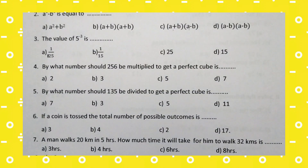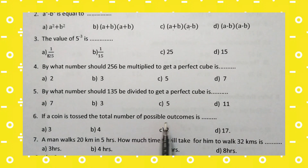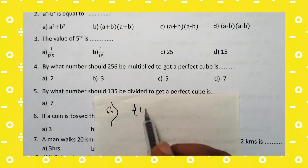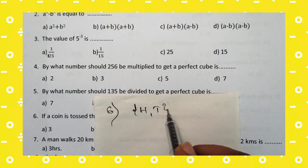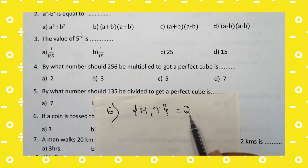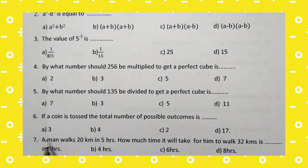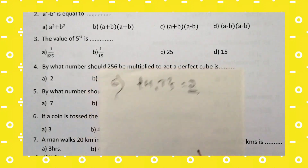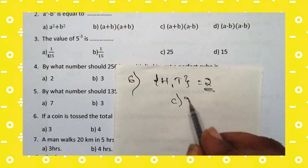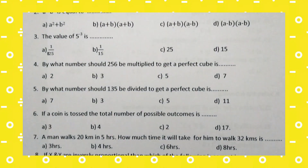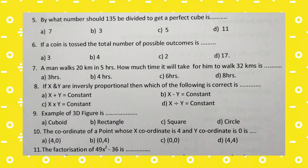Sixth question: if a coin is tossed, the total number of possible outcomes. The right answer is 2 — heads or tails are the two possible outcomes.